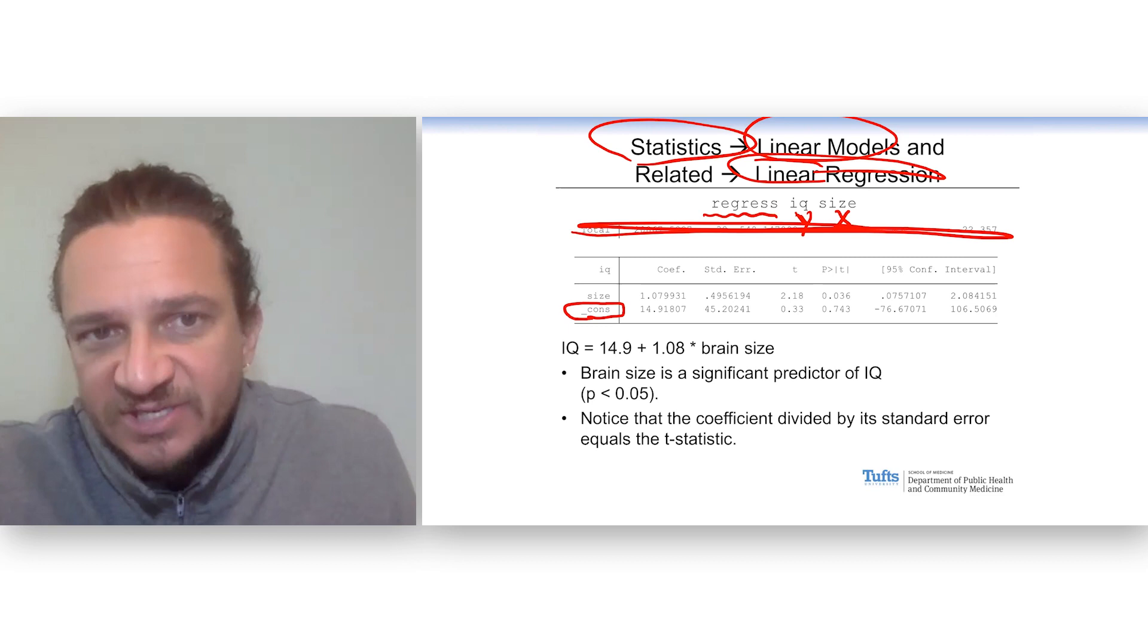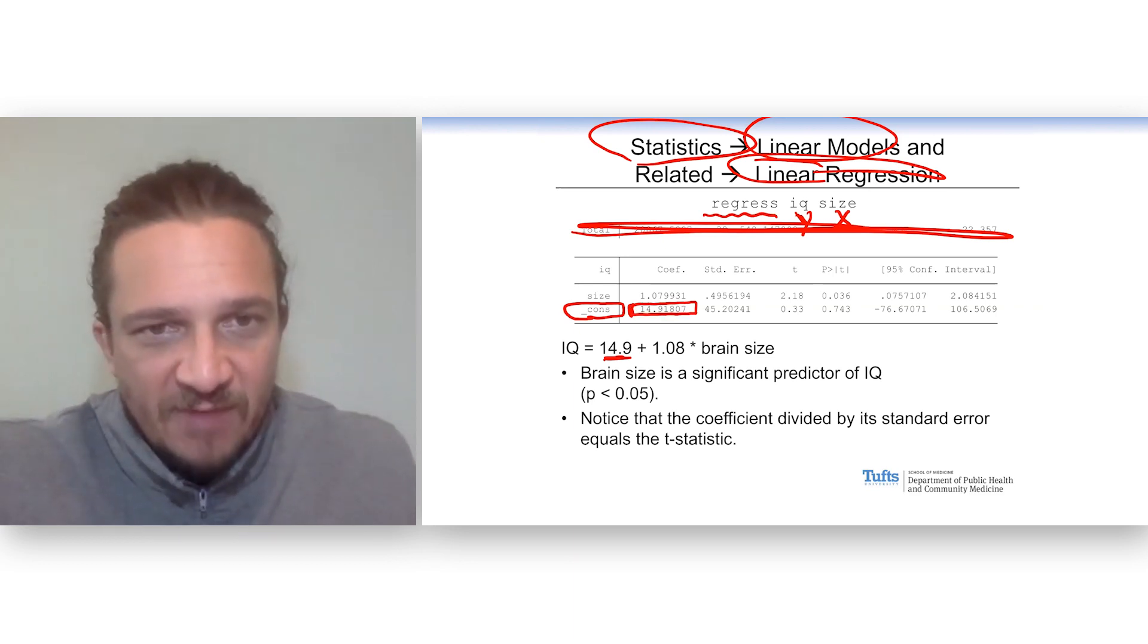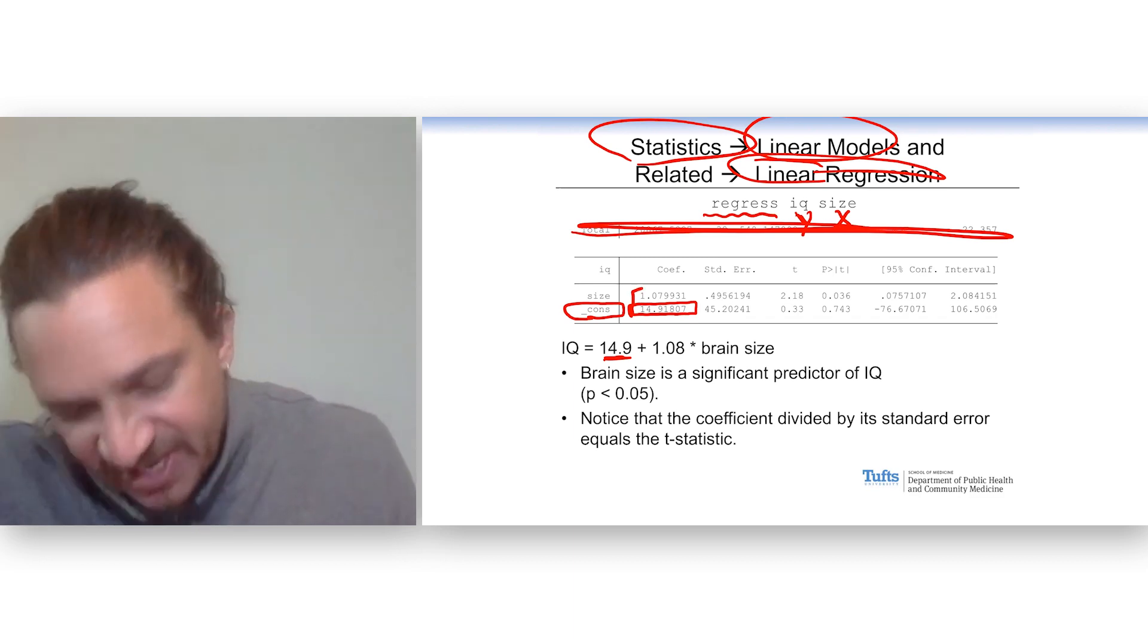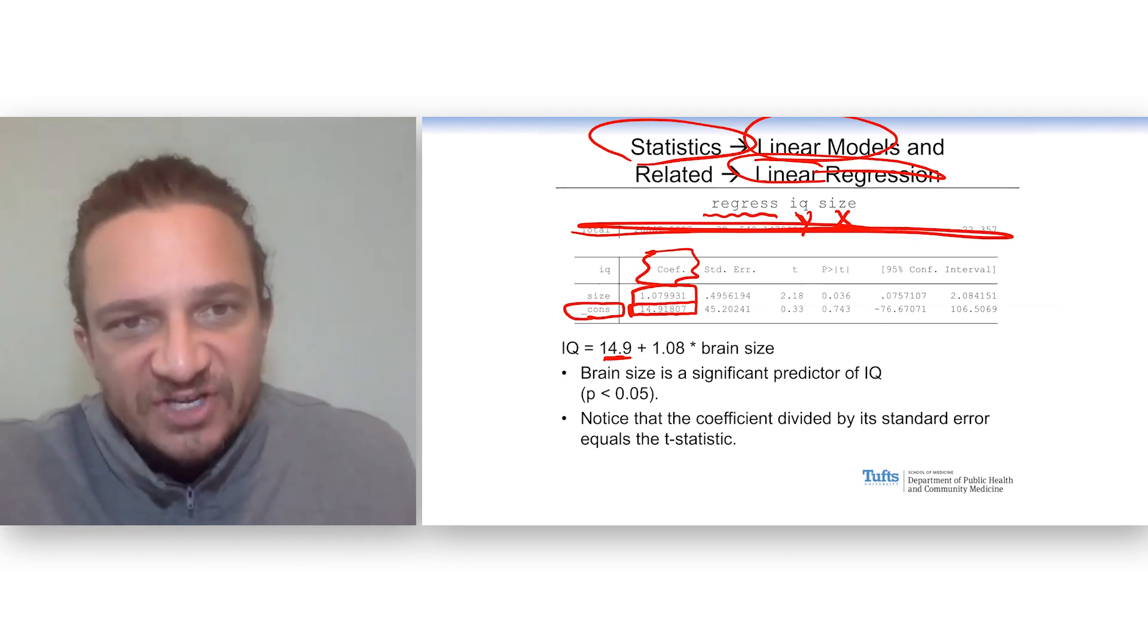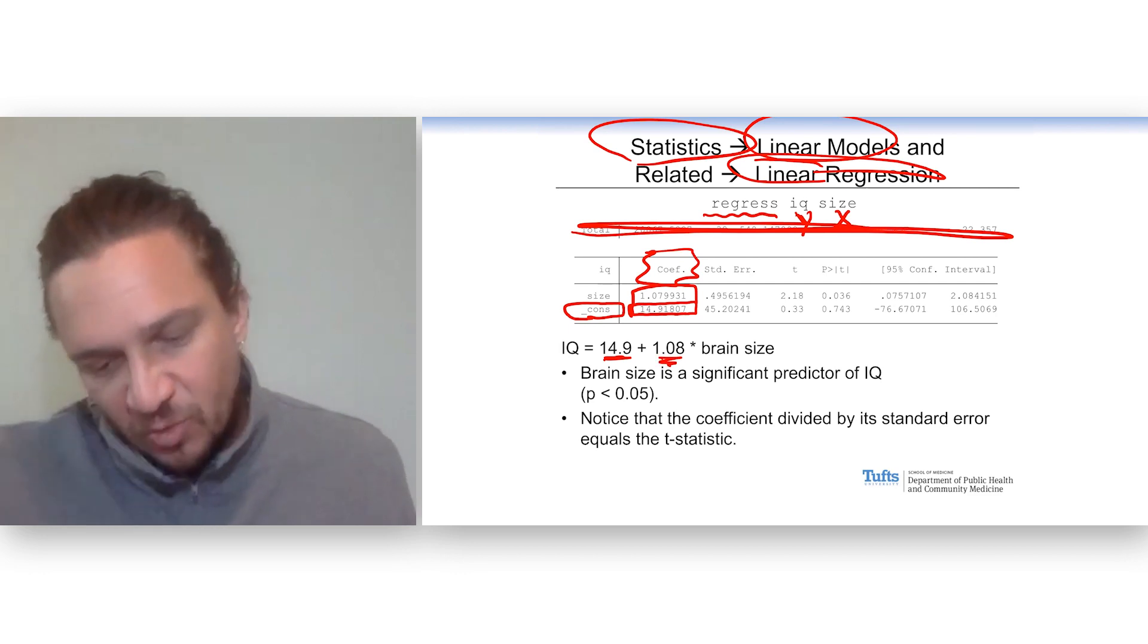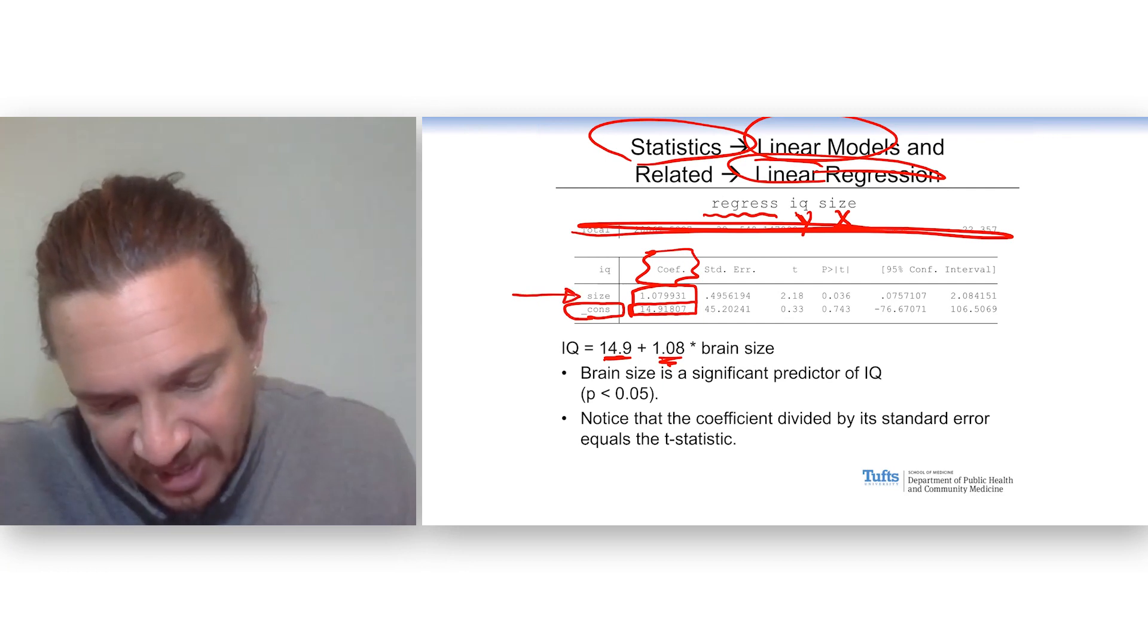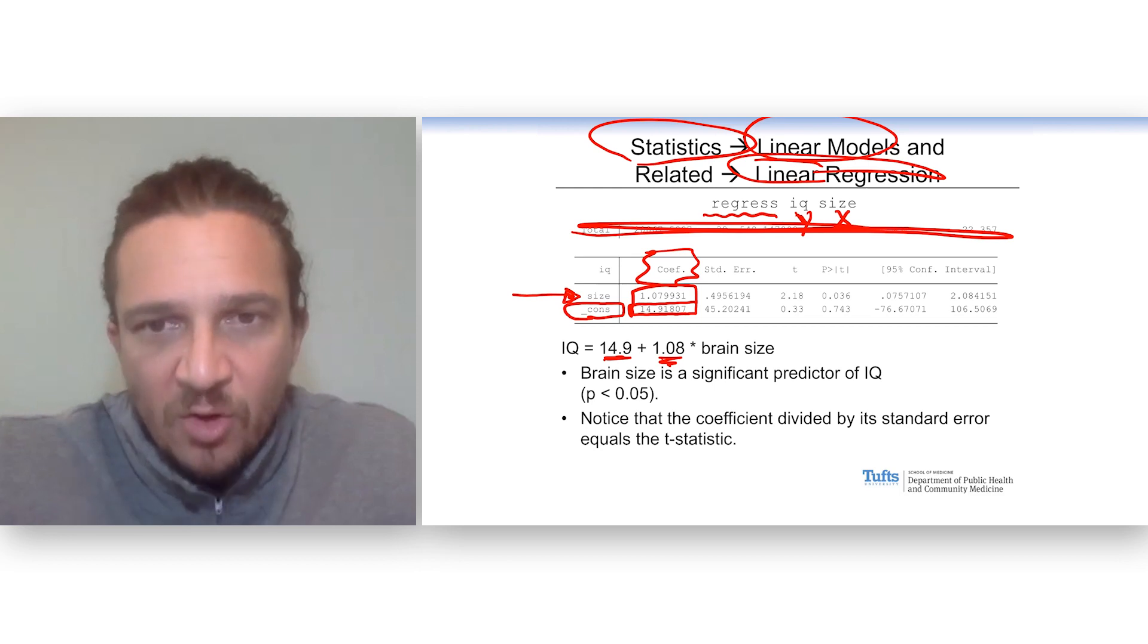What we want to look at here is the equation for the line. Stata spits it out like this. It gives us this thing called the constant. And the constant is going to be the intercept. Regardless of the size of your brain, you get like 14.9 points just for showing up. That gets added to your IQ. And then here we see the slope. Stata labels these with the terms coefficient. And here we see the slope is 1.08. It's nice for us is that it labels the variable itself. That brain size is the thing that's going to change. And you multiply it by 1.08.